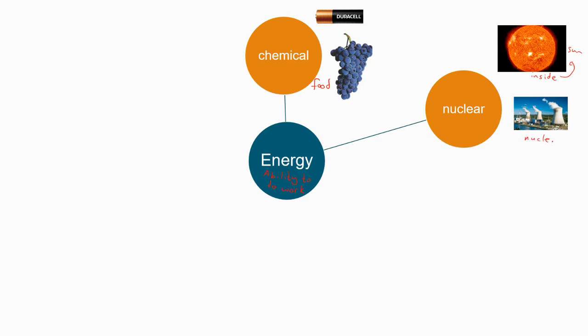So these energies are stored energies. Stored energy is energy that is inside of something and we also call it potential energy. We learned about these energies in Term 1. So the meaning of chemical and nuclear energy is almost the same. Both of these energies are stored in the links between particles. Stored in links between particles.